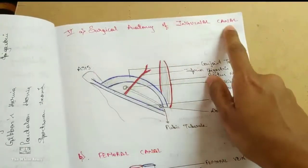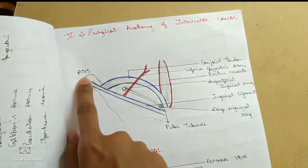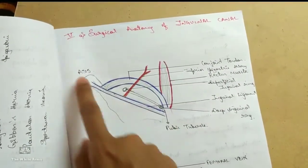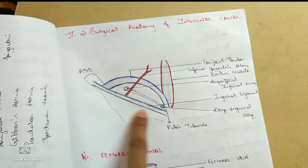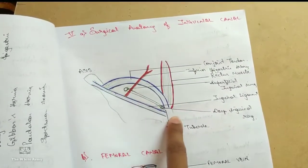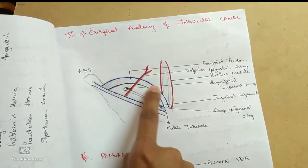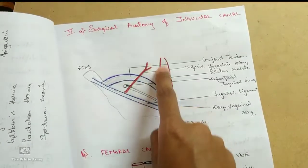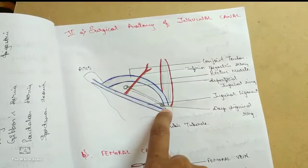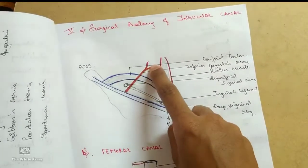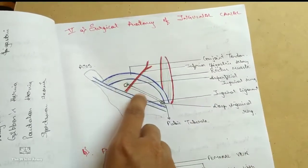Surgical anatomy of inguinal canal. This is the anterior superior iliac spine and pubic tubercle. These are the two bony landmarks. Extending from anterior superior iliac spine to pubic tubercle is the inguinal ligament. This is a conjoined tendon. This is a rectus muscle. This is superficial inguinal ring. This is a deep inguinal ring. This vessel is the inferior epigastric artery. This is the inguinal canal.